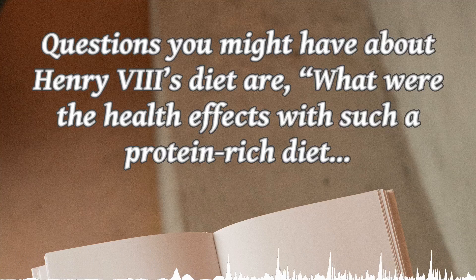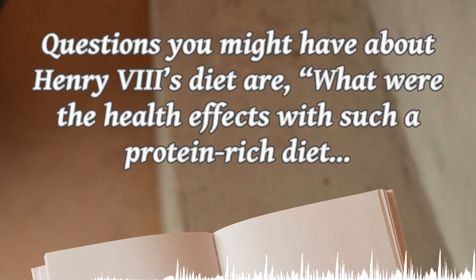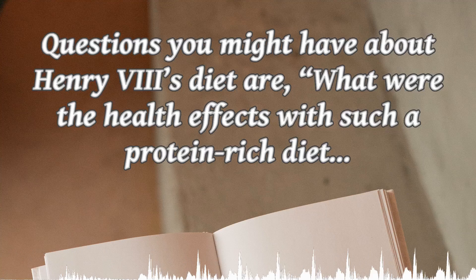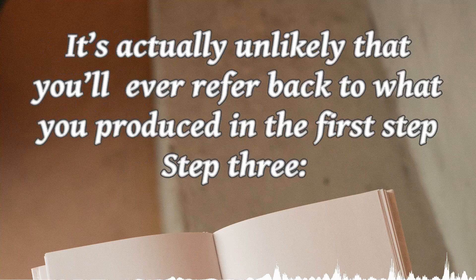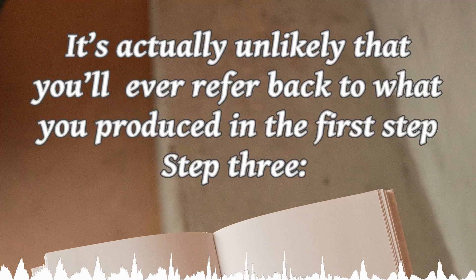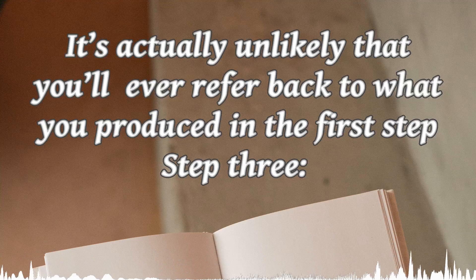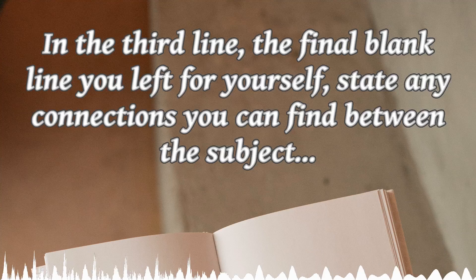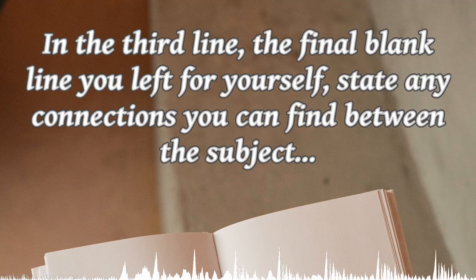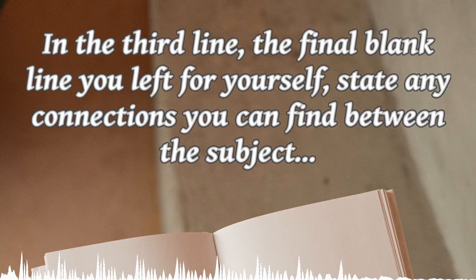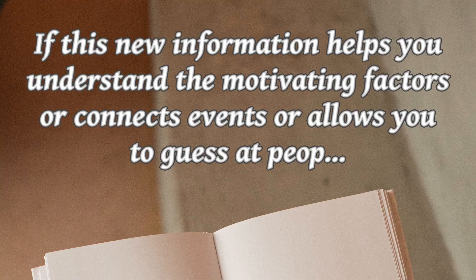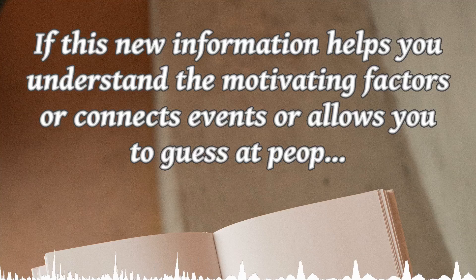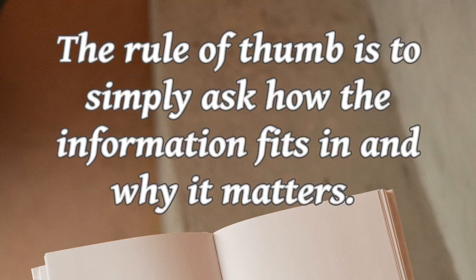Before you move on to the next step, mull over the directions this information might lead and what that all means. Whether you can or cannot answer it, considering the subject deeply enough to form a question will help you remember the facts. Questions you might have about Henry VIII's diet are: What were the health effects of such a protein-rich diet? Or, how many people were involved in getting that much meat on a daily basis? Or, what did peasants eat by contrast? Or, what did other nobles from other cultures consider high status? Use a highlighter or a different colored pen to make this section stand out, as this is the actual information and message you've extracted from the brain dump of the first step. It's actually unlikely that you'll ever refer back to what you produced in the first step.